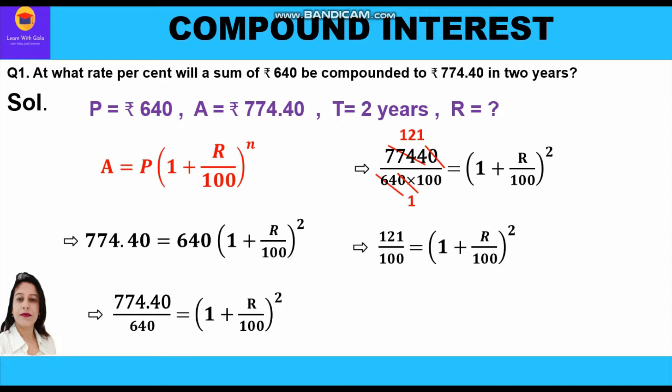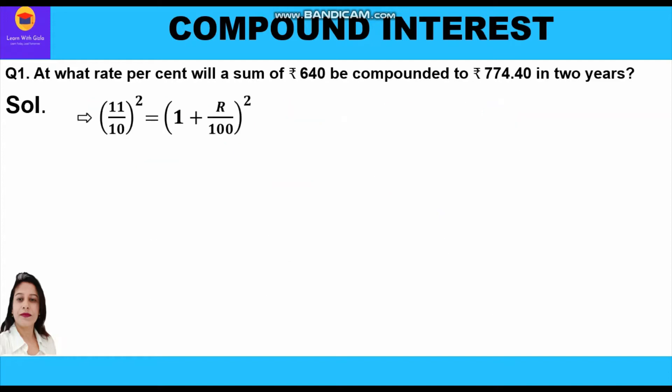Since the right-hand side has power square, the left-hand side must also have the same power. We know that 11 squared is 121 and 10 squared is 100. So we write 11 by 10 whole square is equal to 1 plus r upon 100 whole square. When powers are equal, bases are the same, so 11 by 10 is equal to 1 plus r upon 100.